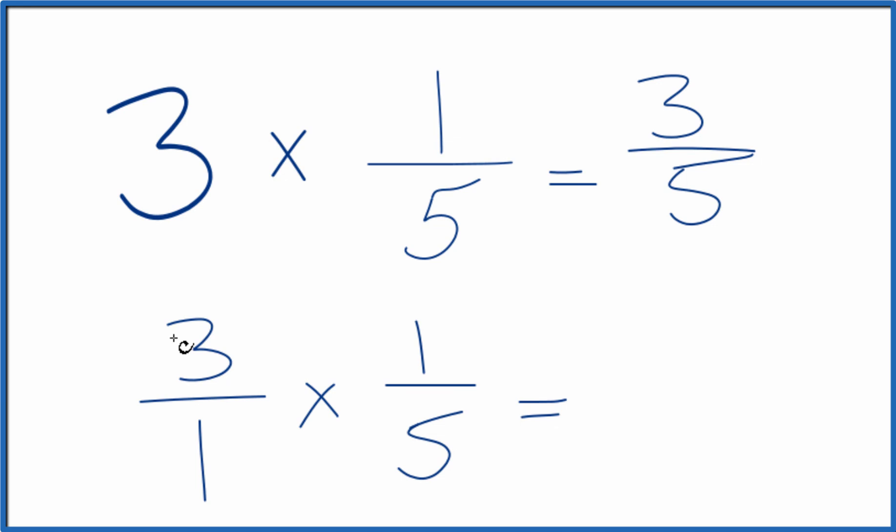So when we multiply fractions, we multiply the numerators, then the denominators. Three times one is three. One times five, that gives us five. Three-fifths, just like we found before.